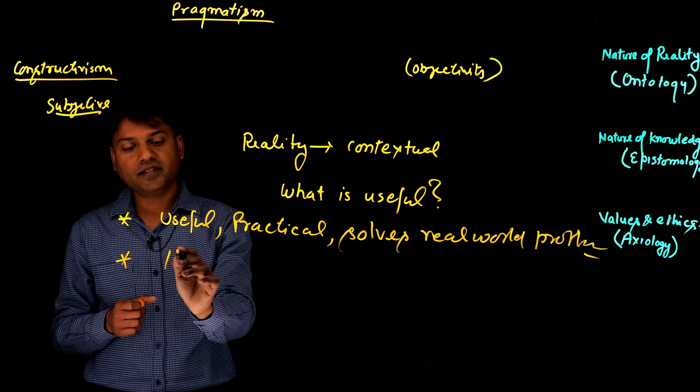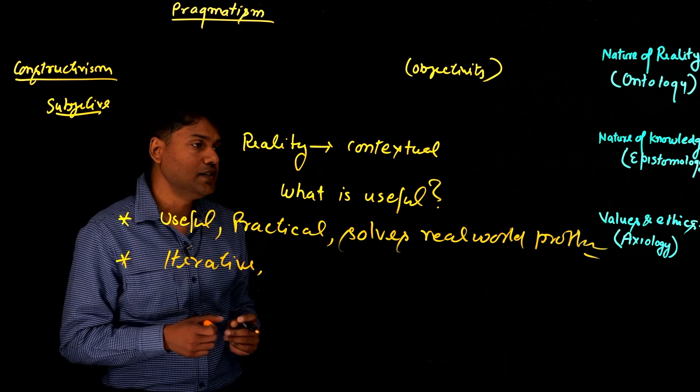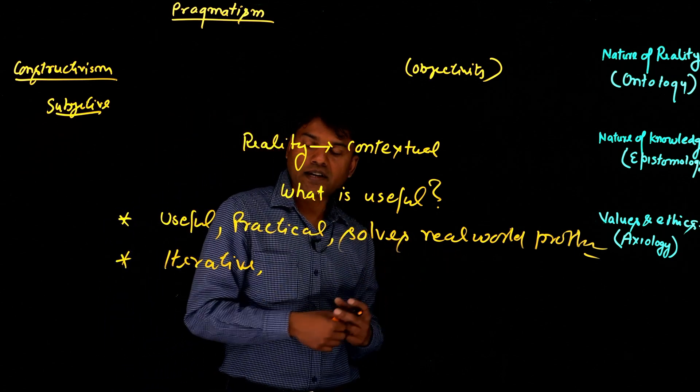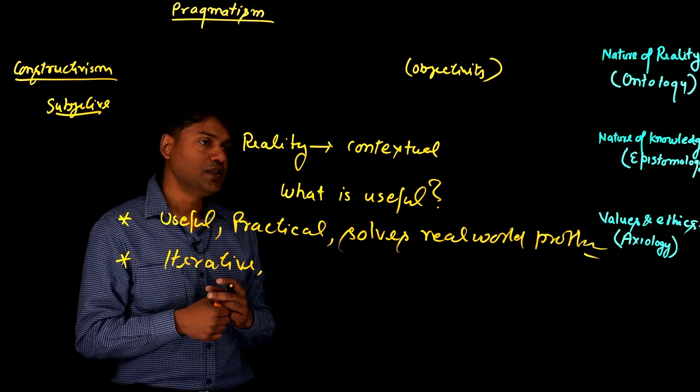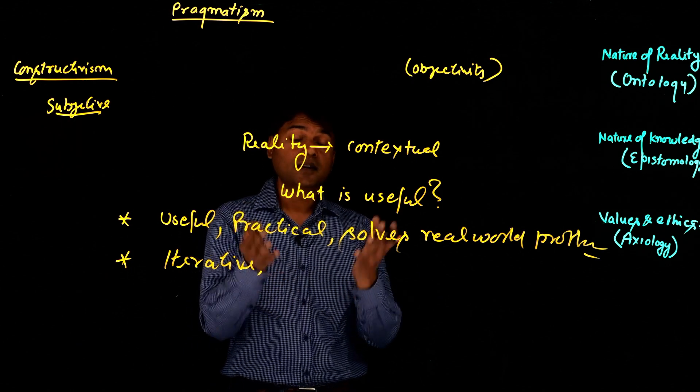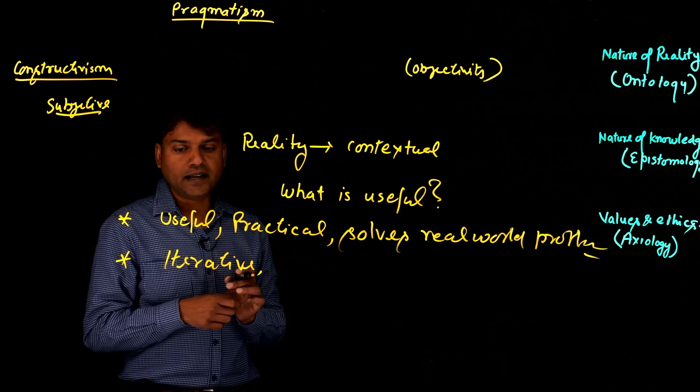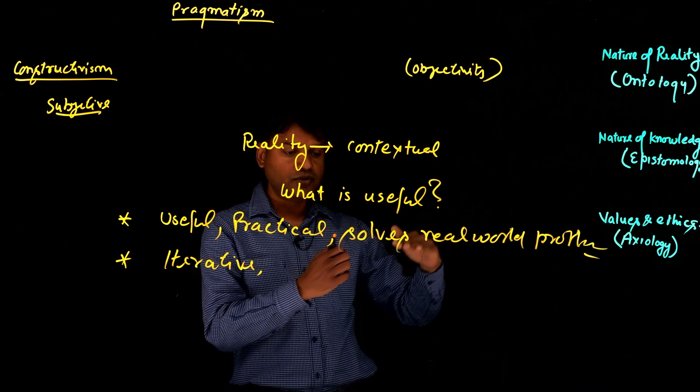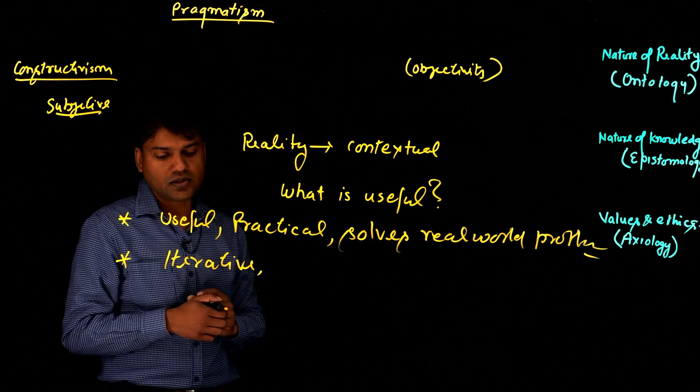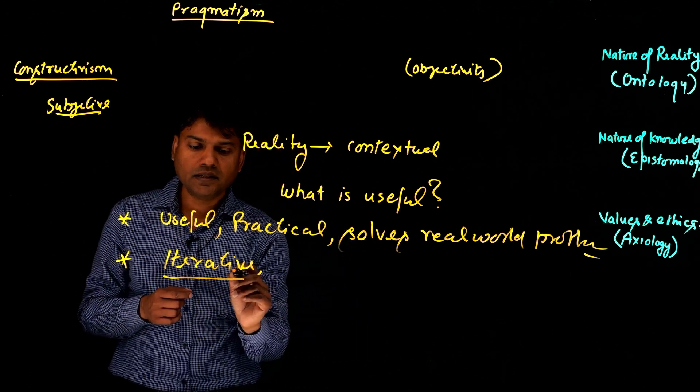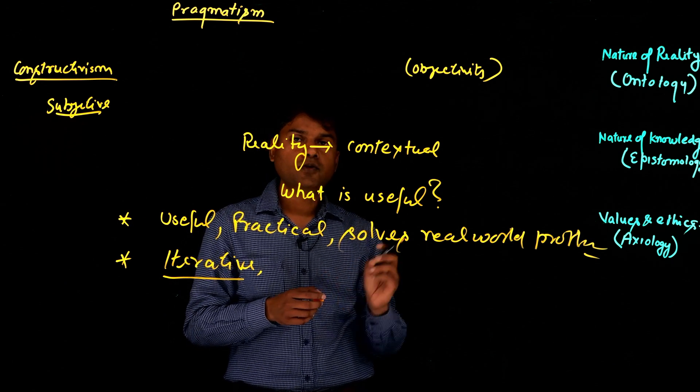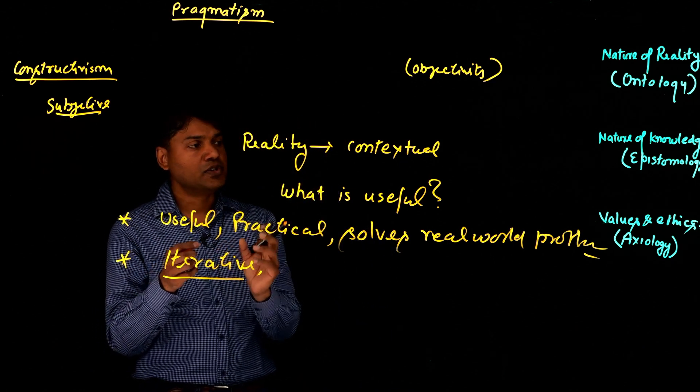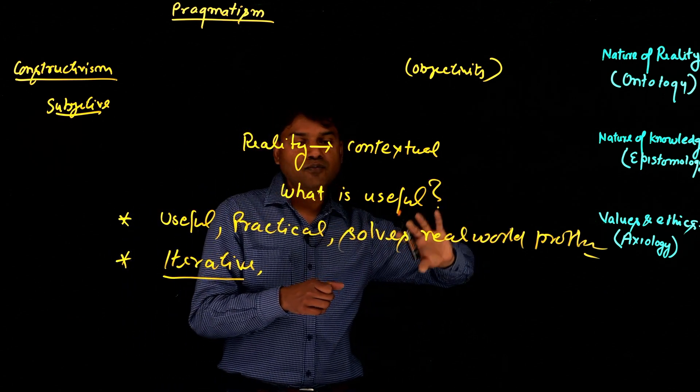Further, they also argue that knowledge is iterative. So knowledge is not fixed. So let's say there is a real-world problem and I, as a researcher, try to understand that problem and I, let's say, come up with a solution. Now is this solution is going to be permanent? Maybe not. Maybe tomorrow this problem might come up in a different shape and different kind and then I need to again find some new ways to solve the same problem. So knowledge is iterative. It keeps building one after another. So you keep building the knowledge. It's not static. It's not fixed. And knowledge is driven by the problems.